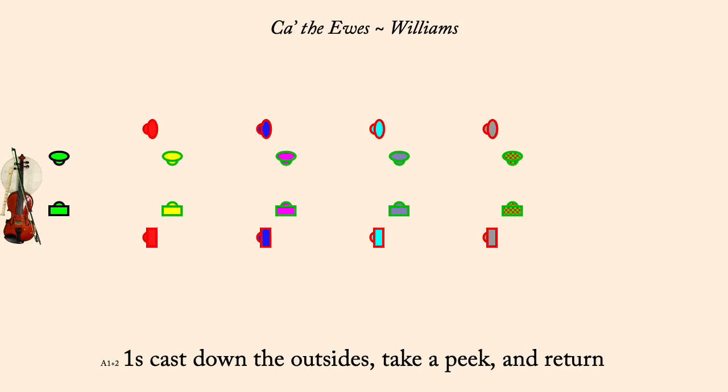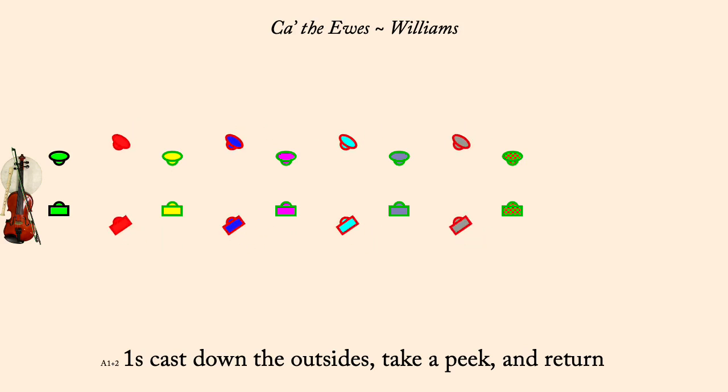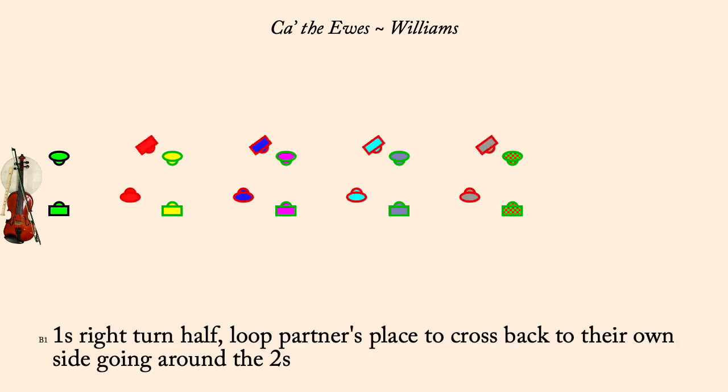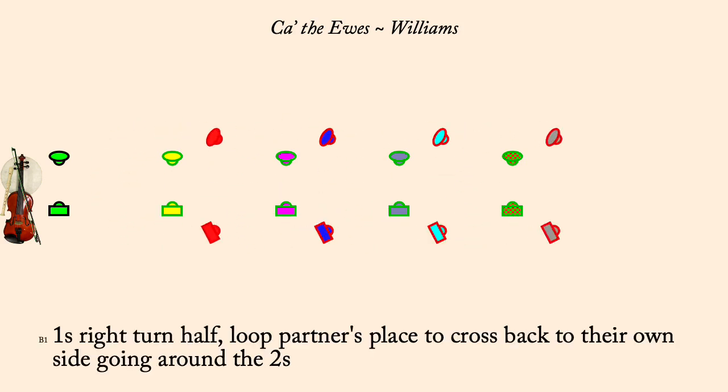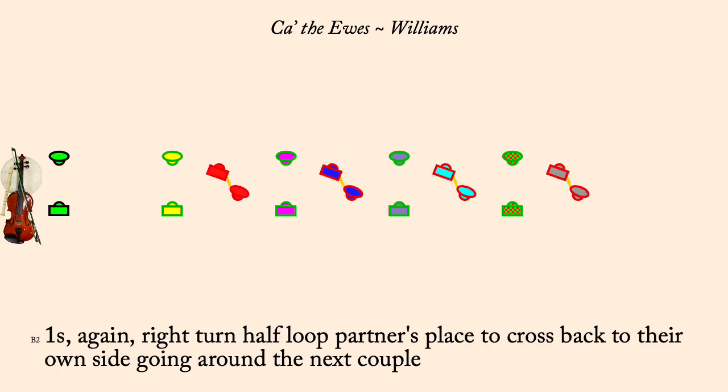One's right, turn half, loop partners, place, cross, loop, couple below. Again, one's right, turn half, loop, cross, loop, couple below.